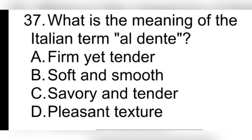Question 37. What is the meaning of the Italian term 'al dente'? A. Firm yet tender. B. Soft and smooth. C. Savory and tender. D. Pleasant texture. Correct answer: A. Firm yet tender.